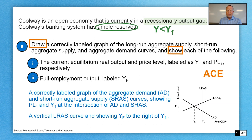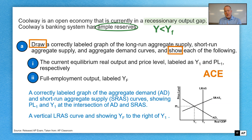Remember, ACE your graphs: axes — price level and GDP; curves — correctly labeled; equilibrium — correct. In this case, that equilibrium is showing that we have a recessionary gap, so Y1 is going to be over to the left of YF.